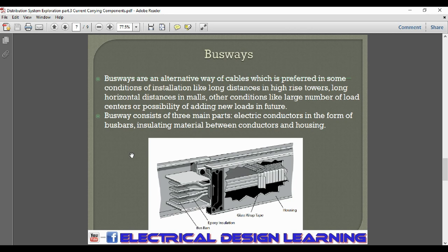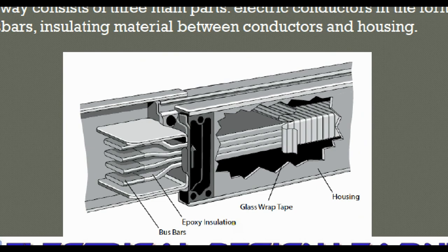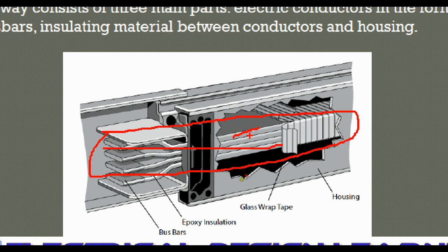A busway consists of three main parts: electric conductors in the form of bus bars, insulating material between the conductors, and the housing. This picture shows the main components of the busway — first the conductors in the form of bus bars or parallel bus bars, then the insulation found between and around the bus bars, and finally the housing which contains all the components of the busway.